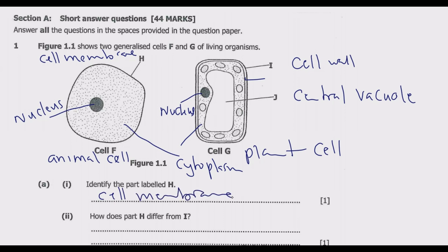Then part ii: How does part H differ from I? So H is cell membrane, then I is cell wall. So what's the difference? The difference comes in terms of permeability. So H is